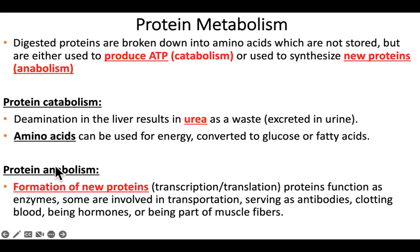Protein anabolism is building new proteins. To do that, you're going to need a gene, because that contains the information for how to make that protein. You're going to transcribe that gene and then translate it in order to build new functional proteins in the human body. So that's what we mean by protein metabolism — either utilizing amino acids for energy by first removing the amino group, or using amino acids to build new proteins.